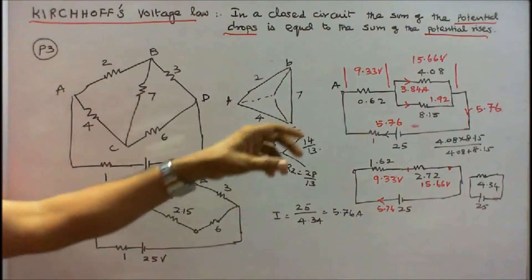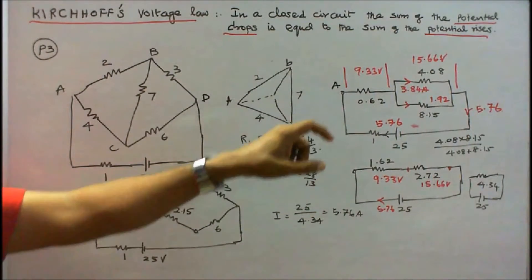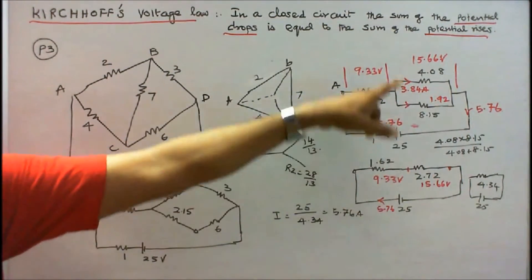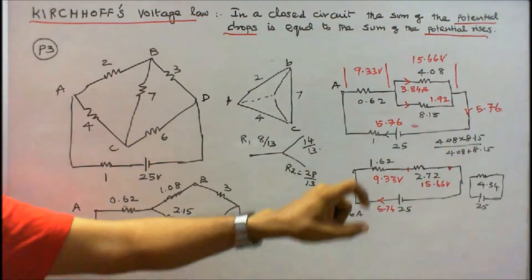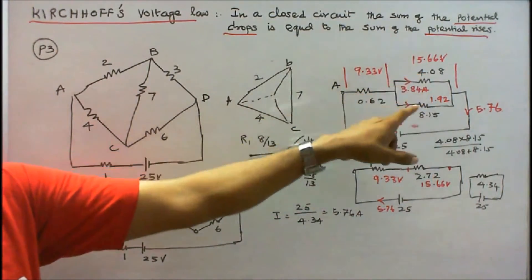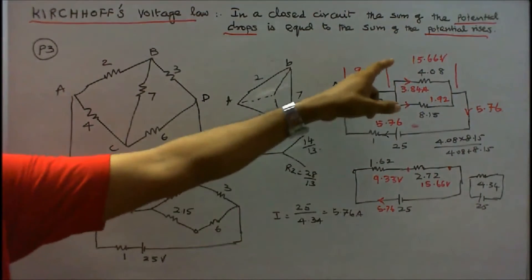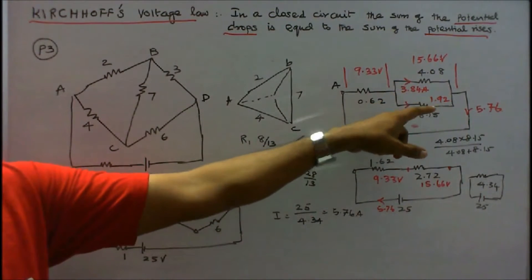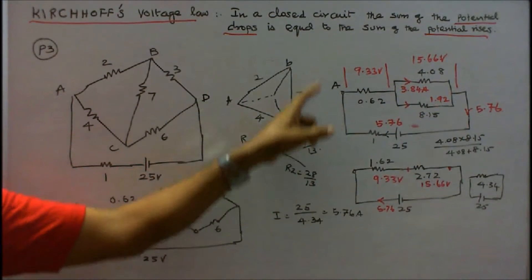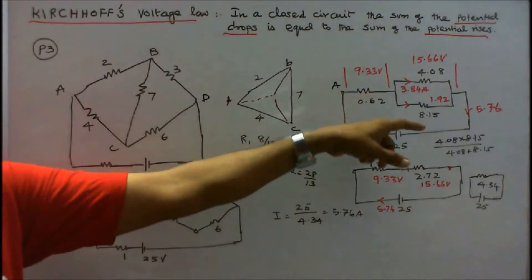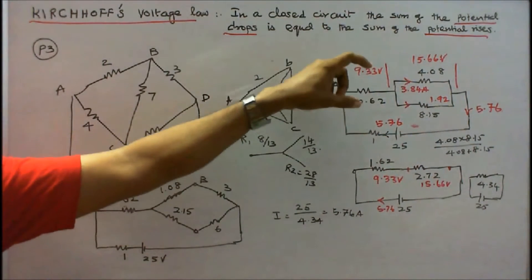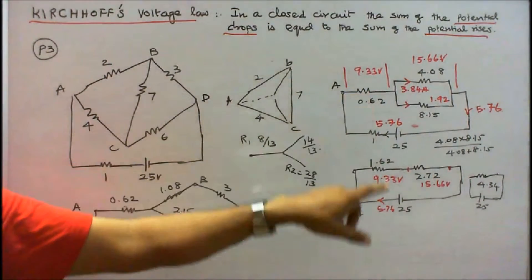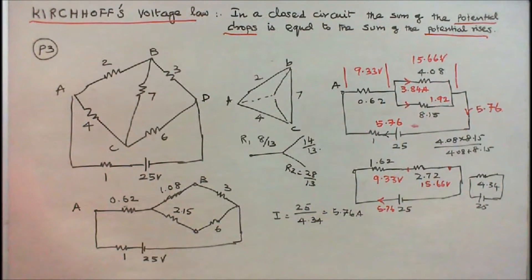I also want to verify Kirchhoff's Current Law. Current towards the junction is 5.76 amps. These two branches are in parallel; the voltage across this combination is 15.66V. Therefore, 15.66 / 4.08 = 3.84 amps, and 15.66 / 8.15 = 1.92 amps. 3.84 + 1.92 = 5.76 amps. Current towards the junction is 5.76 and current leaving the junction is 5.76. KVL and KCL are both verified. Current through the 1 ohm resistor is 5.76 amps.